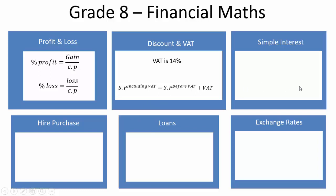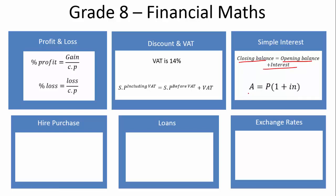Well done. We can now fill in our simple interest formula. With simple interest, the closing balance equals the opening balance plus the interest. Our first identity is: A, our accumulated total, equals P, our principal value, times (1 + i·N), where i is our interest rate and N is the number of years.